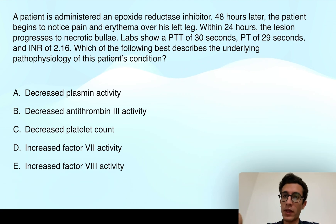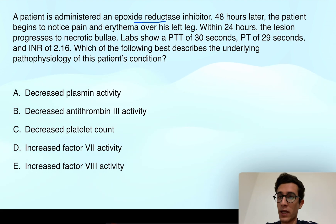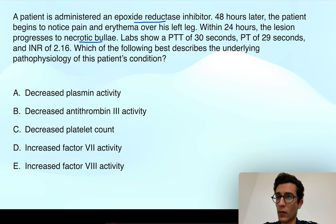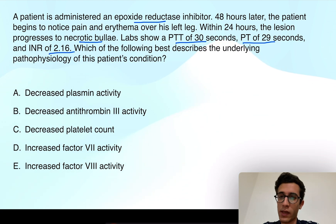We have a patient administered an epoxide reductase inhibitor. 48 hours later, the patient begins to notice pain and erythema over his left leg. Within 24 hours, the lesion progresses to necrotic bullae. Labs show a PTT of 30, PT of 29, INR 2.16. Which of the following best describes the underlying pathophysiology of this patient's condition?